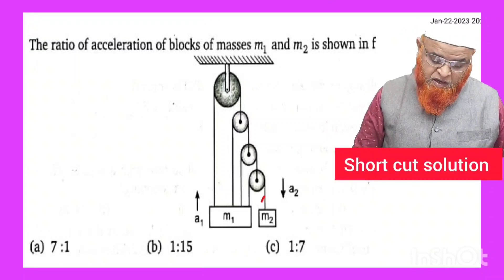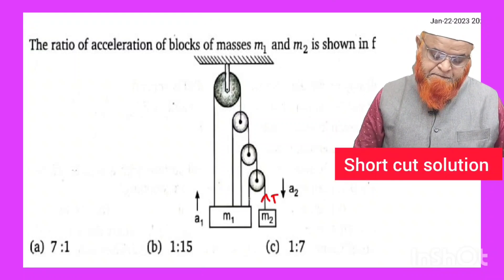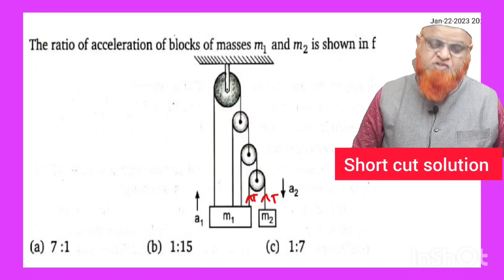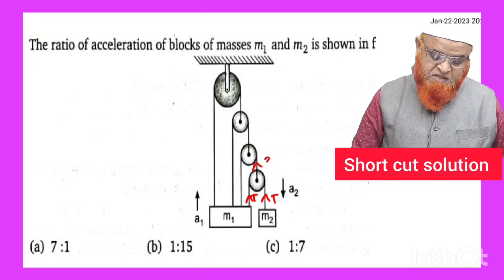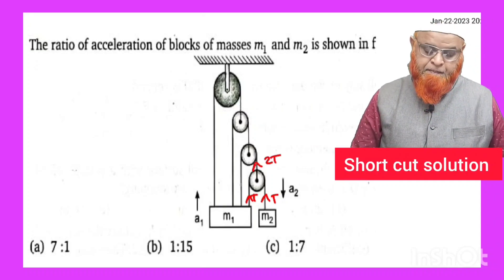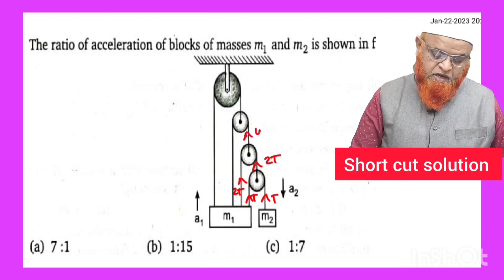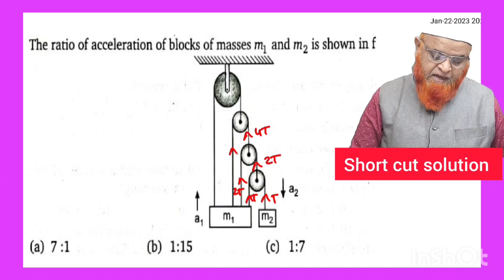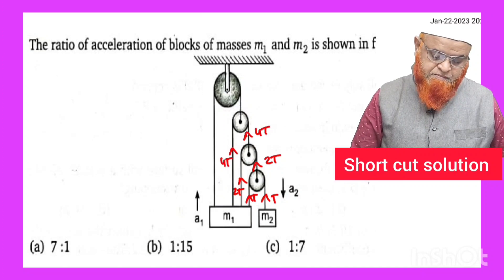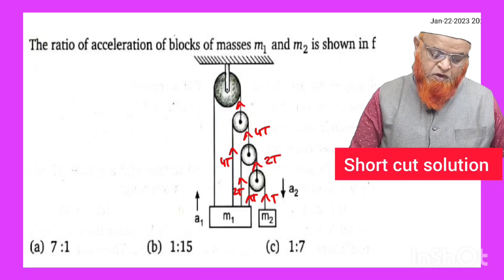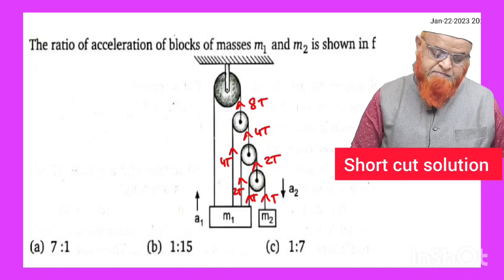First of all, this is going to be tension T and this is also going to be tension T. That means this is tension 2T and this is also tension 2T. So 2T plus 2T is going to be 4T and this is going to be 4T.